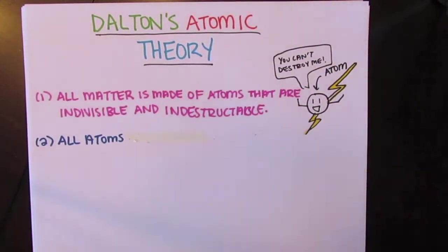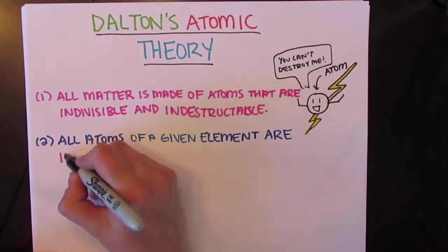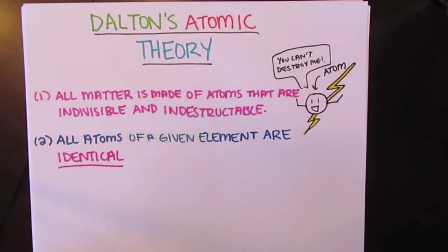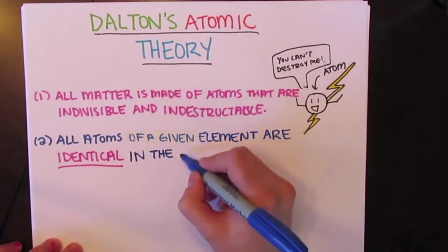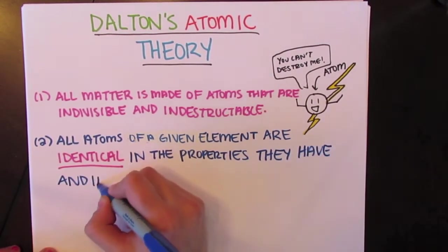The second component is that all atoms of a given element are identical in the properties they hold and identical in their mass. This means that two carbon atoms, for example, would have the exact same mass and have the exact same properties.